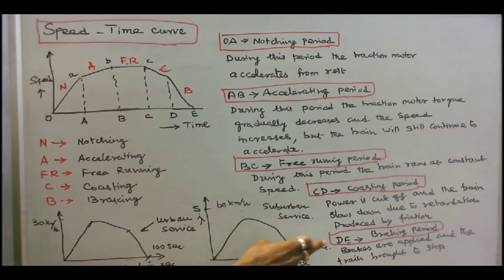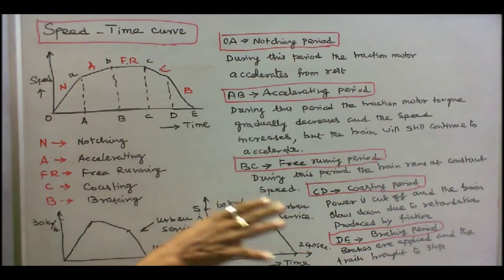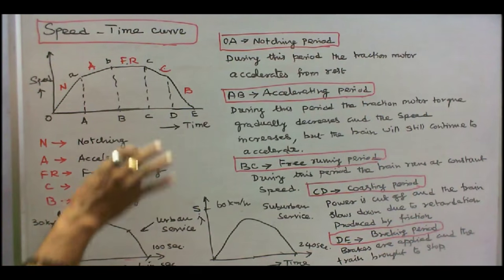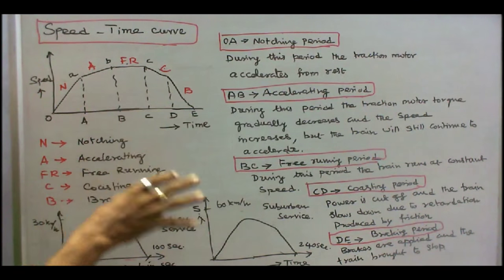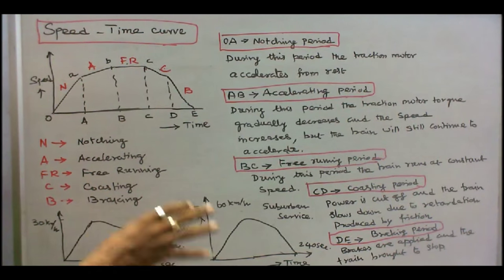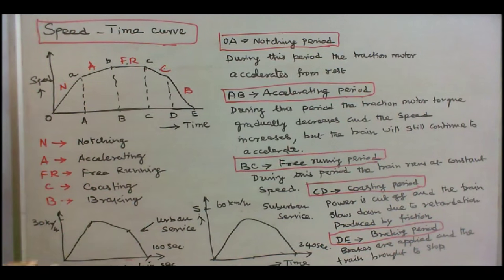D-E is the braking period. During this period, the brakes are applied and the train is brought to a stop.